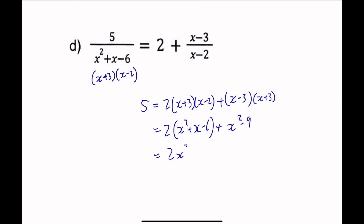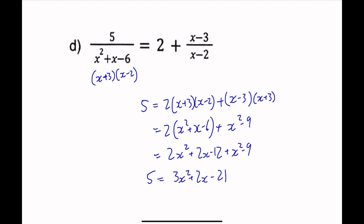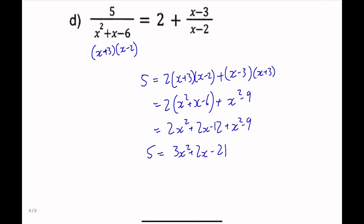Expanding: 2x squared plus 2x minus 12 plus x squared minus 9, which equals 3x squared plus 2x minus 21. Since this all equals 5, moving the 5 over gives us 3x squared plus 2x minus 26 equals 0.